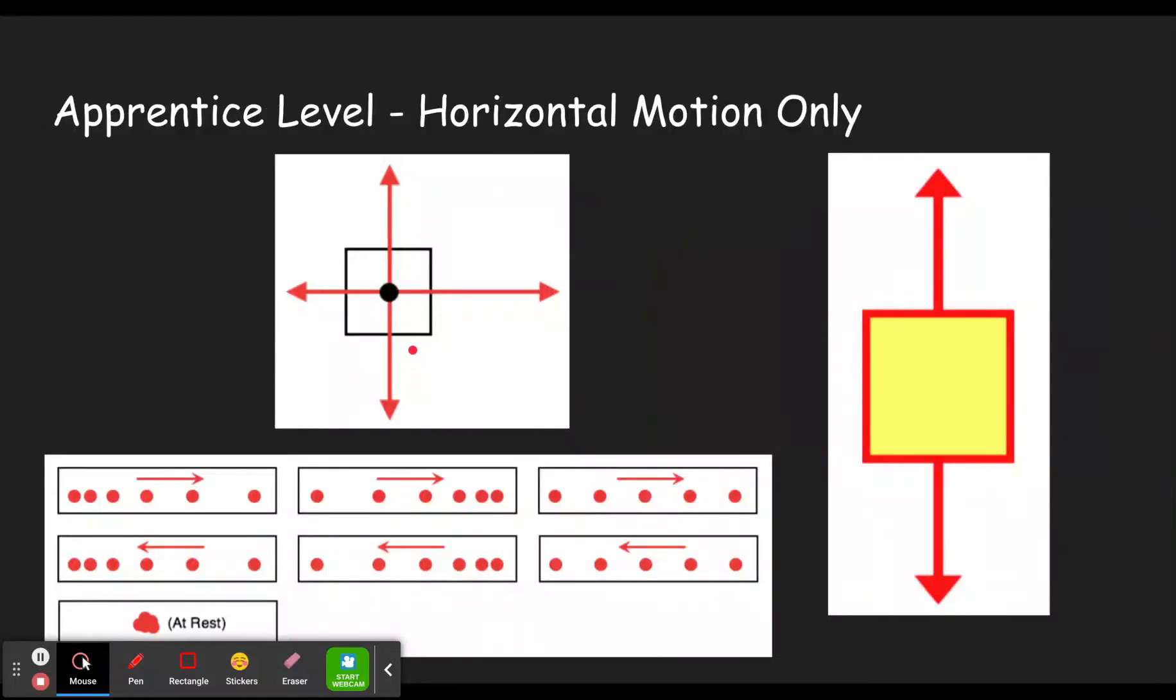Here is the apprentice level. You'll get one picture like this, or like this, and a bunch of dot diagrams. You'll have to decide which of these dot diagrams matches the free body diagram. Once again, the free body diagrams are described in that last video. I'm also going to link here my video that describes dot diagrams, in case this is your first time being exposed to dot diagrams.